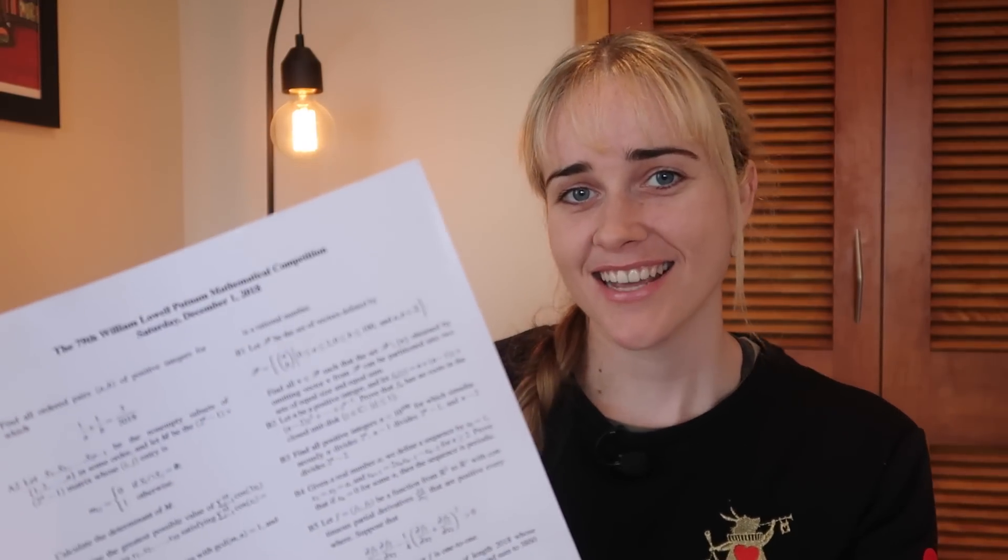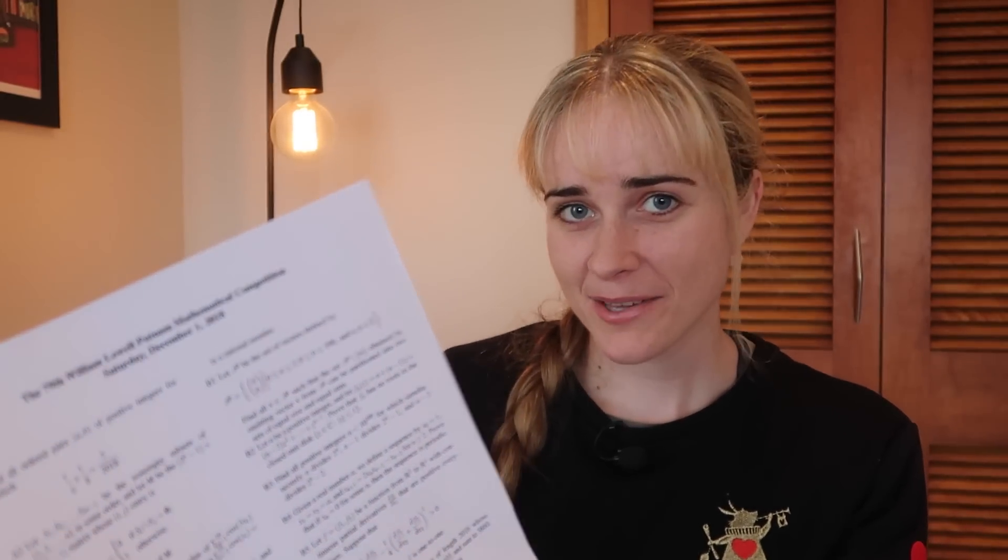So this is the Putnam competition, which is a math exam for American undergrad students. As a way to demonstrate its difficulty, you can look at what the scores usually are. This exam, even though it has 12 questions in total, each worth 10 points, so that's a total of 120 points, the median score is usually between zero and one. And that's despite the fact that students who sit this exam are usually specializing in mathematics. So that means at least half of the students often get zero marks on this exam.